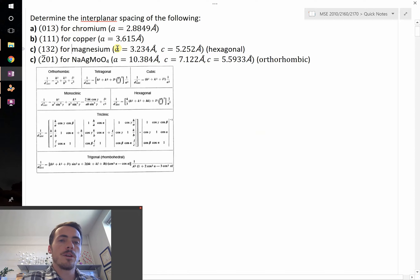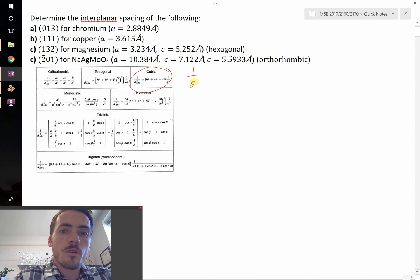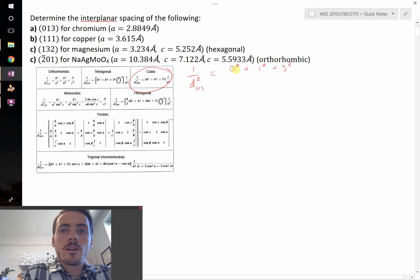For question A, chromium, we're given the lattice parameter and the hkl value for the plane. We're going to use this equation. We know that 1 over d squared—and that d is going to correspond to these specific hkls, the 0, 1, 3—that's going to correspond to h squared, which is 0 squared, plus k squared, which is 1 squared, plus l squared, which is 3 squared.